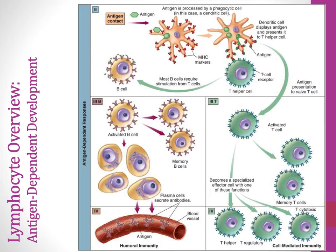Looking at our B cell, it can interact with the antigen-presenting cell — the dendritic cell, which could be any kind of phagocyte like a macrophage or neutrophil. It interacts with the MHCs on that cell. If the antigen is recognized by the B cell receptor, it becomes activated. T helper cells can help with this, producing a stronger response. Some of those B cells will become memory B cells, others will become plasma cells — activated mature B cells that secrete antibody.